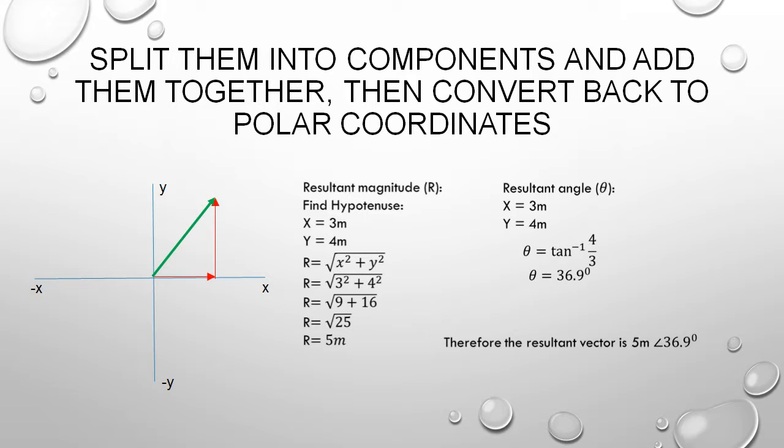We could use the Pythagorean theorem, so R equals square root of x squared plus y squared, where x represents the x components of all the vectors and y equals all the y components. If we substitute all of that in, we got five meters as the resultant magnitude of the vector.